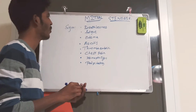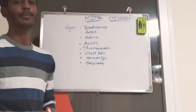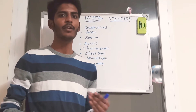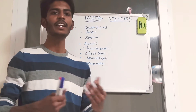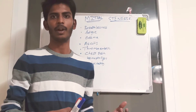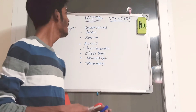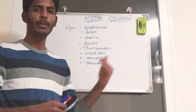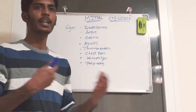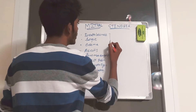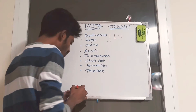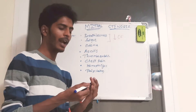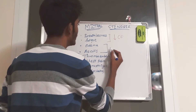Why do fatigue and breathlessness occur? When a person with mitral stenosis undergoes vigorous physical activity, he needs more oxygen. There is not enough blood coming from the left atria to the left ventricle, so cardiac output is decreased — that causes breathlessness and fatigue. Edema and ascites occur because of right ventricular failure and right ventricular hypertrophy.